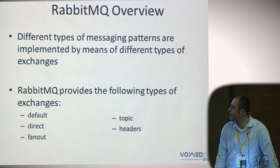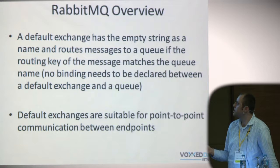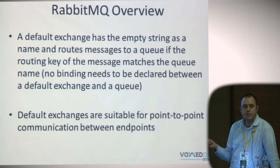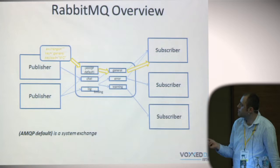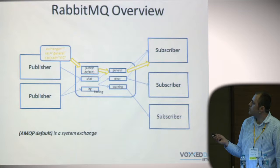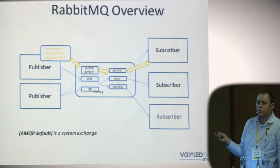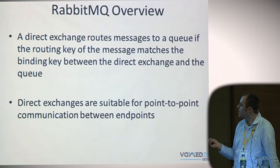There are several types of exchanges. A default exchange has the empty string as a name and routes messages to queues if the routing key of the message matches the name of the queue. For example, if you send a message to the default exchange with a key of 'general', it will route that message to a queue called 'general', which then delivers it to exactly one subscriber.